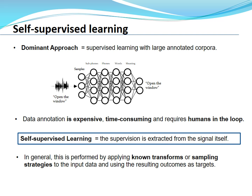In self-supervised learning, we apply some kind of known transformation or sampling strategies to the input data, and we use the resulting outcomes as targets. The labels are obtained for free, without humans in the loop. The main issue is that self-supervised learning on speech is really challenging. Speech is a very complex signal characterized by high dimensionality and huge variability due to speakers, accent, language, environmental conditions, recording setups, and many other variabilities.